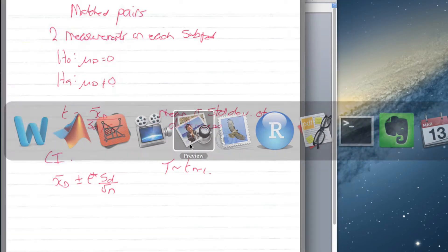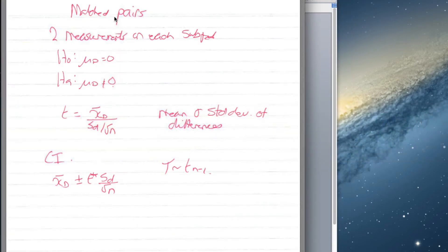Here's your cheat sheet. We've got matched pairs. The thing we care about now is called the difference, and we're looking at the mean of the differences. The null hypothesis is that the mean of differences equals zero, and the alternative is not equal to zero. This looks pretty much like a one-sample t-test, but now the thing we're looking at is the mean and the standard deviation of the differences.